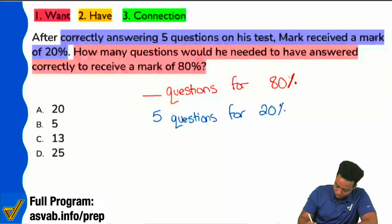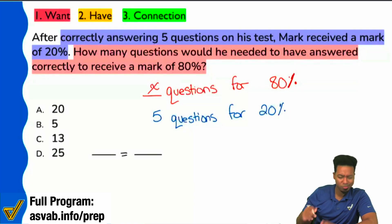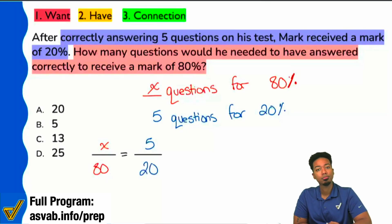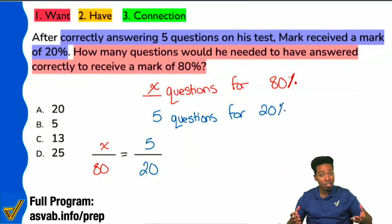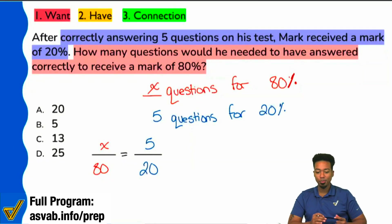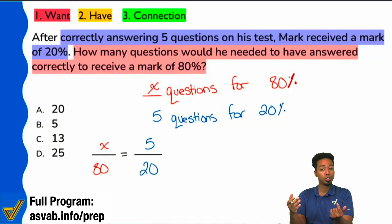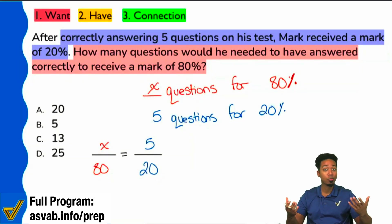So watch right over here. We're going to set this up and say X questions. Notice that we'll have X questions correct giving us 80%, and we can compare that to five questions correct being 20%. Do we see that again, in this proportion, we're comparing the same things in the same way — number of questions correct up top, the percent correct on the bottom. That's the idea.